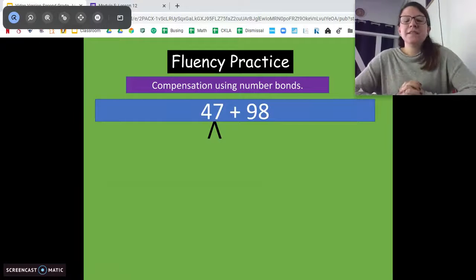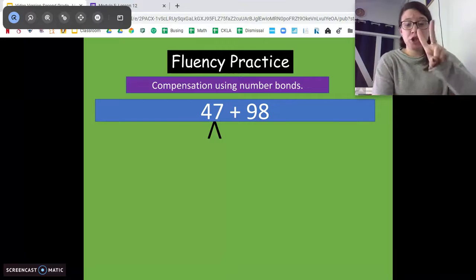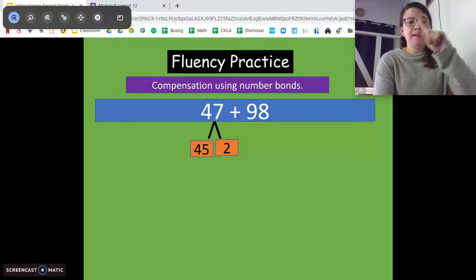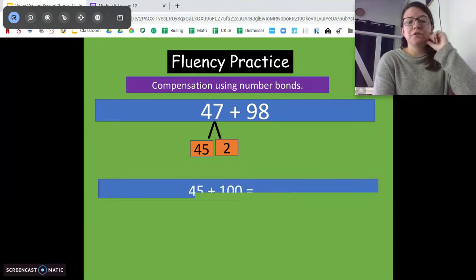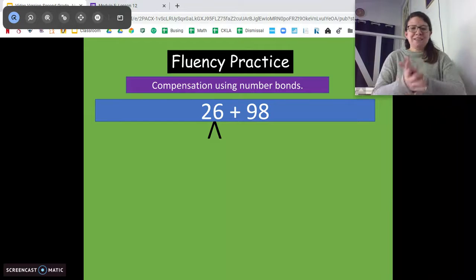Next one. Same idea. Get 98 to its next 100. Pause and solve. Good. We need 2, right? So we're gonna take the 2 out. We get 45 and 2. 98 plus 2 is 100, plus our extra 45. 145. Awesome job! You're getting it. Keep going.